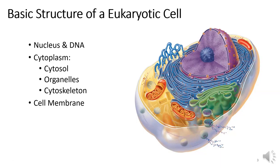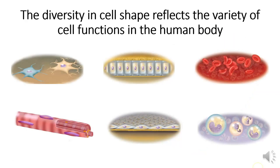Cells vary in shape and size and some internal structure depending on the specific function the cell performs. On this slide are diagrams of different cell types whose structures reflect their different functions. The upper left picture shows neurons with extensions that perform electrical communication. The upper middle picture shows epithelial cells that line the trachea. The upper right shows red blood cells that carry oxygen.